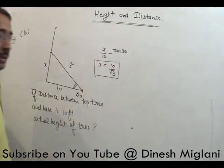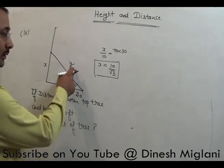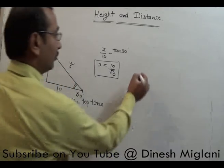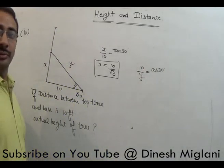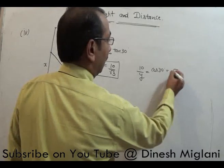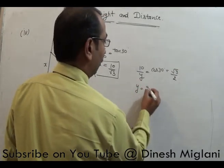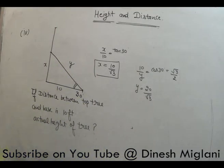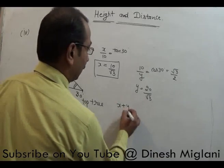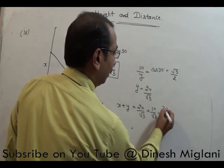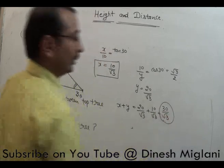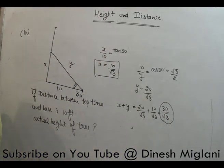For the second part: 10 upon Y equals cos 30, which is root 3 by 2. So Y equals 20 upon root 3. The total height of the tree equals X plus Y, which is 10 upon root 3 plus 20 upon root 3, giving 30 upon root 3. That is the original height of the tree.